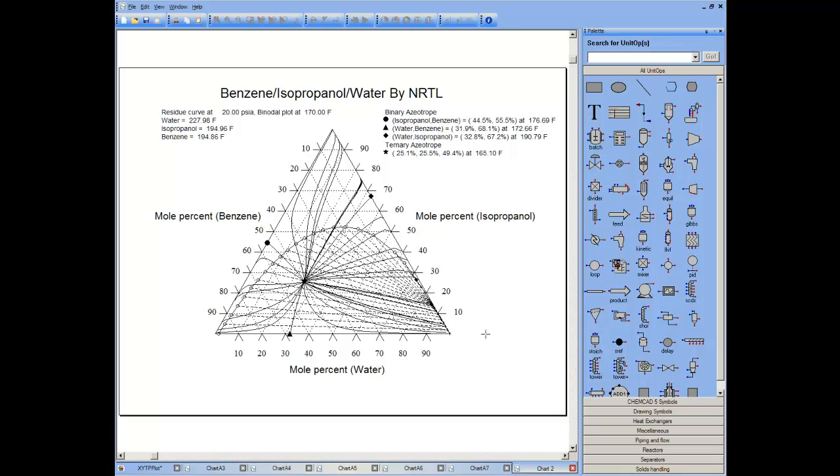First is the isopropanol water azotrope. Second is the benzene isopropanol azotrope. And third is the vapor composition of the heterogeneous azotrope between benzene and water. Note that these points, that is in this case the heterogeneous azotrope, connects up with the ternary azotrope.